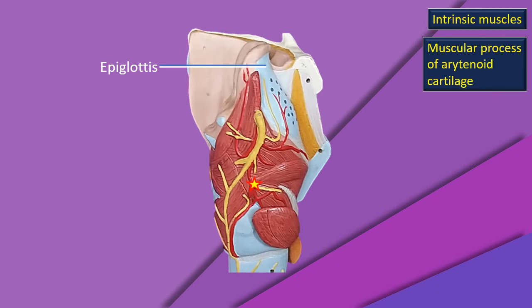Now, once again, let's keep track of the epiglottis. This is now a direct lateral view of the larynx model. One thing that stands out is that yellow blinking star — all of you concentrate on that star. That is a very, very important landmark: the tip of the muscular process of the arytenoid cartilage. It will be present throughout this discussion because it is the key anchor point around which all the muscles are going to be identified.